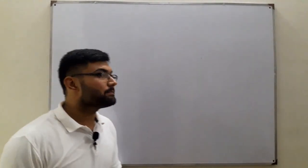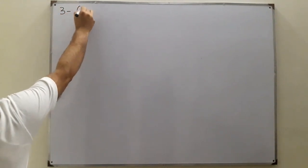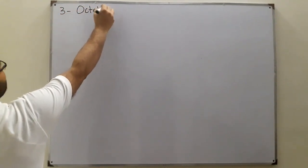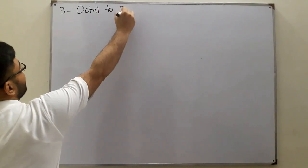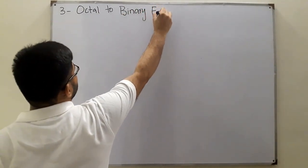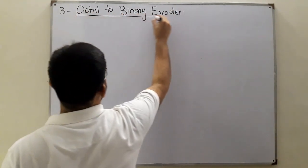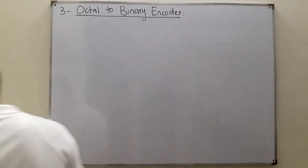Bismillahirrahmanirrahim, Assalamualaikum, Salah Khan here. Today we see the third type of encoder, which is the octal to binary encoder. You know what octal is and what binary is. In octal we have a base 8, which means we have numbers from 0 to 7.